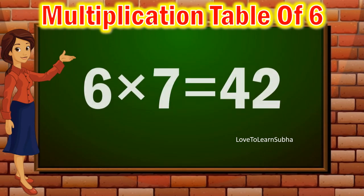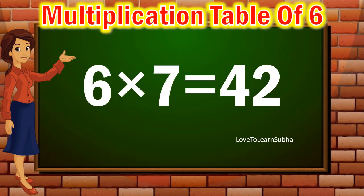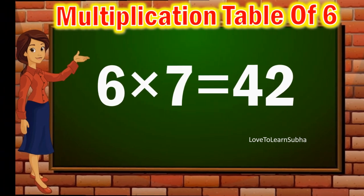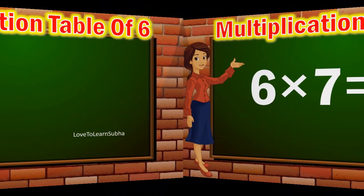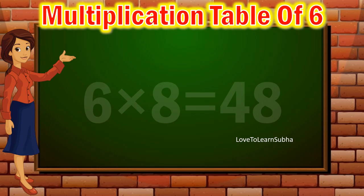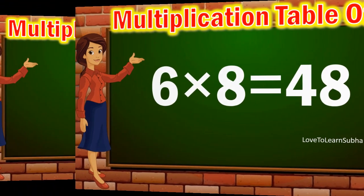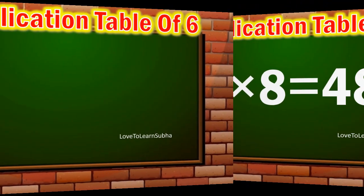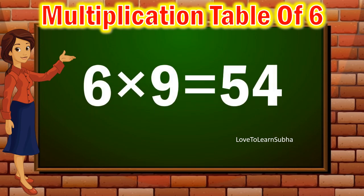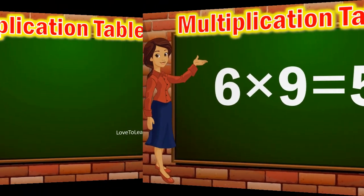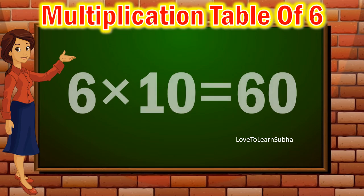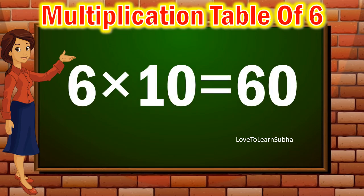6 sevens are 42. 6 eights are 48. 6 nines are 54. 6 tens are 60.